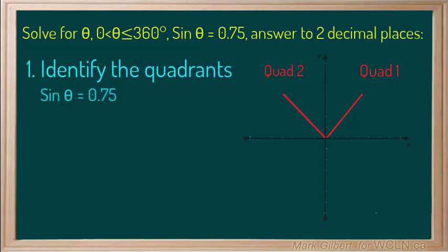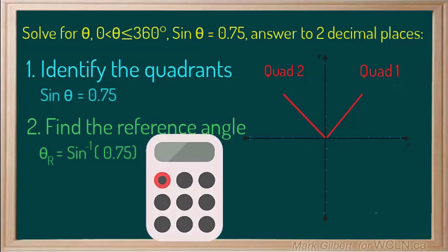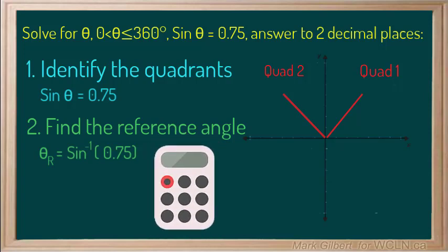The second step is to find the reference angle. To find the reference angle, we need to find the inverse sine of 0.75. We can do this using the calculator and the second function key on the sine button.